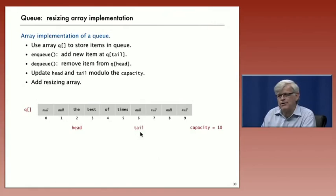So for enqueue, you add a new item at tail. And for dequeue, you remove an item from head. And the trick is that once you get past the capacity, you have to reset back to zero.